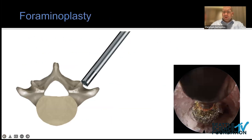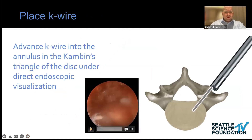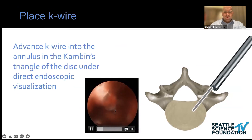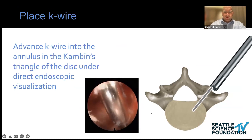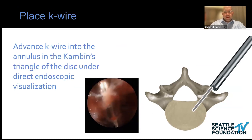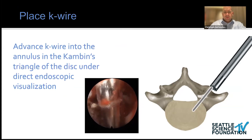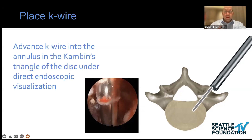The foramenoplasty can also be completed with a high-speed drill once you're in there, if the reamers didn't complete it. The last step is visualizing the entrance into Kambin's triangle. Here's a recent example — a thoracic disc case — where looking through the endoscope into the foramen you can see the spinal cord, and under vision we're bringing the Chamsheedy needle in. I can't hit the spinal cord or the exiting nerve root because I can see exactly where we're going. This is a visualization I would challenge anyone doing MIS surgery to match when entering Kambin's triangle.